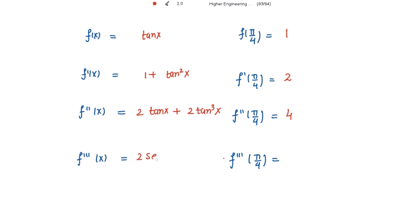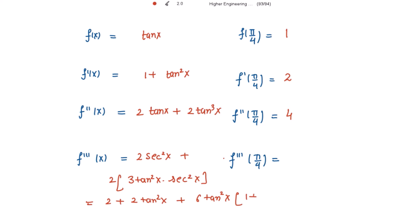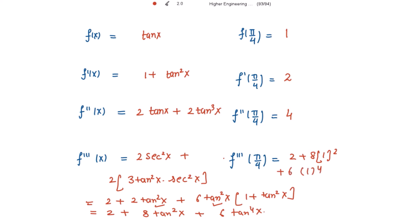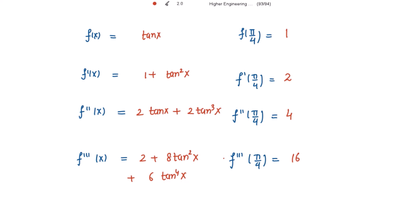For the third derivative, differentiating f''(x) = 2·tan(x) + 2·tan³(x): the derivative of 2·tan(x) gives 2·sec²(x) = 2(1 + tan²(x)), and the derivative of 2·tan³(x) gives 6·tan²(x)·sec²(x) = 6·tan²(x)·(1 + tan²(x)). So f'''(x) = 2 + 2·tan²(x) + 6·tan²(x) + 6·tan⁴(x). At x = π/4: f'''(π/4) = 2 + 8(1) + 6(1) = 16.